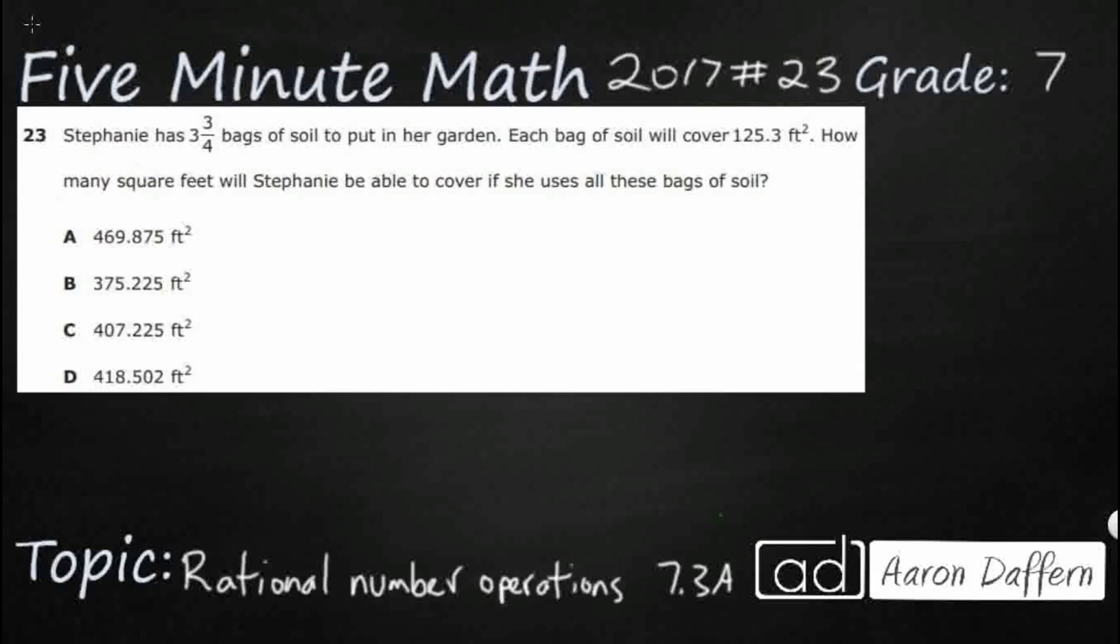Hello and welcome to 5-Minute Math. Today we are looking at the 7th grade concept of rational number operations. This is standard 7.3a in the great state of Texas and we are using item number 23 off the 2017 released STAR test.